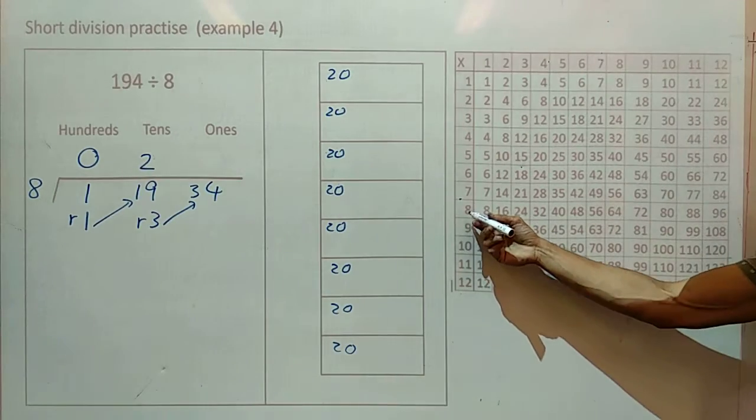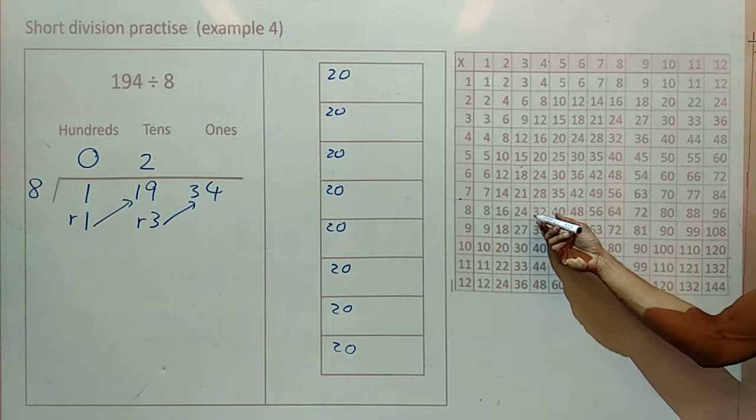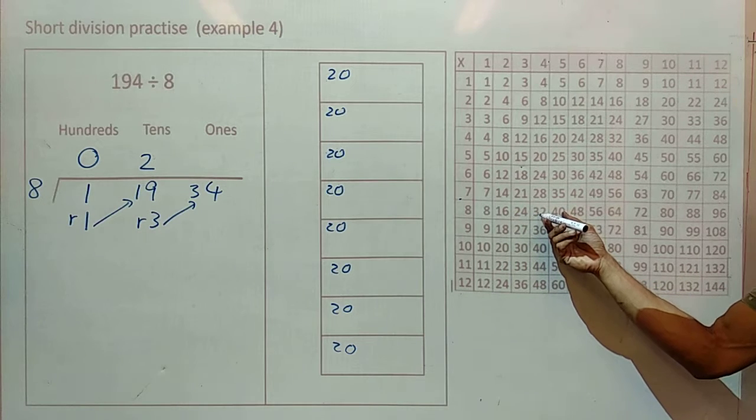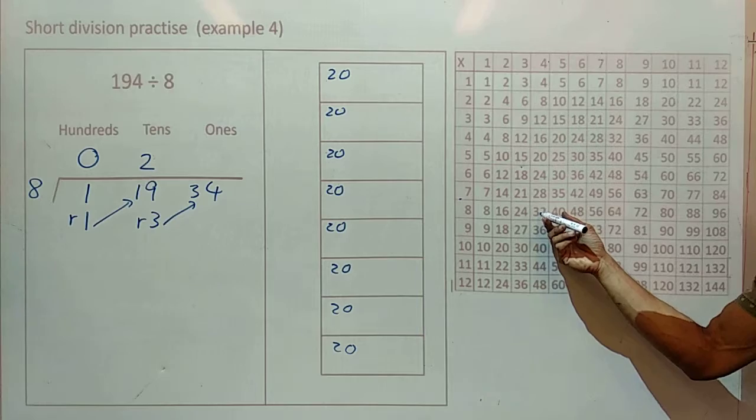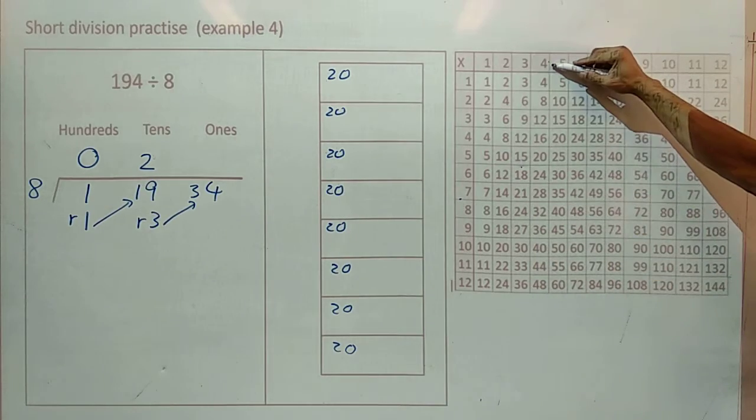Let's check. So on row 8, you can see that 32 is the largest number that is smaller than 34. So if you look out, you see 4.